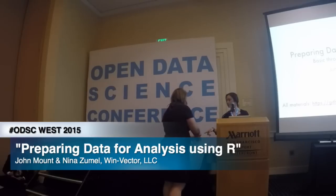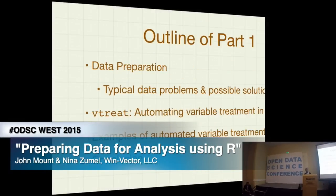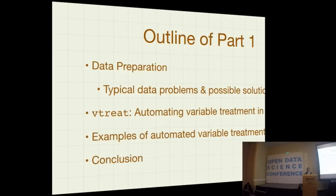We're going to split this workshop into two parts. I'm going to give the first part and John is going to give the second part. The first part covers the operational aspects of data preparation — basically data cleaning, common problems in finding data, and how to deal with them in R. We'll give examples of common issues, how to address them, and how to automate data treatment, including a concrete example: the vTreat package, which we've developed for automated data cleaning.